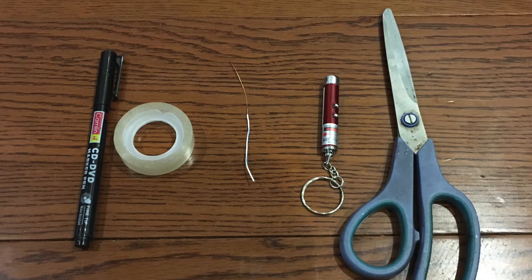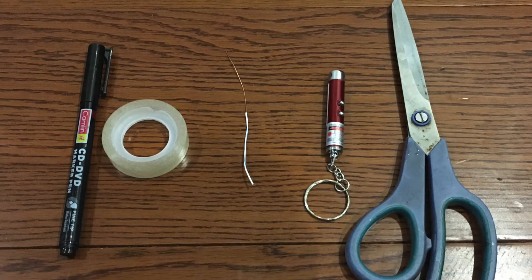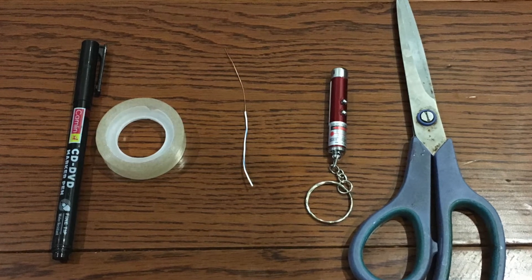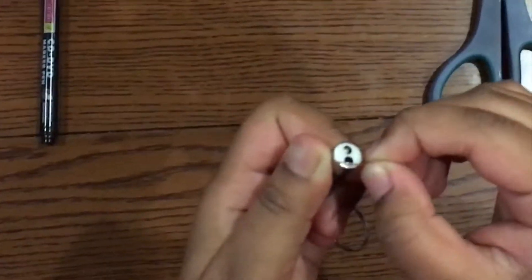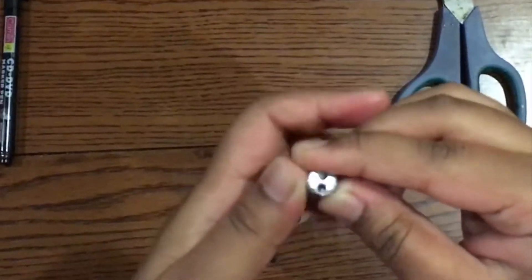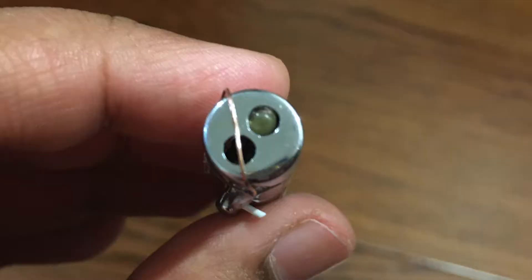First take a wire and put it in front of the laser pointer to make two slits like this, then tape it like this.